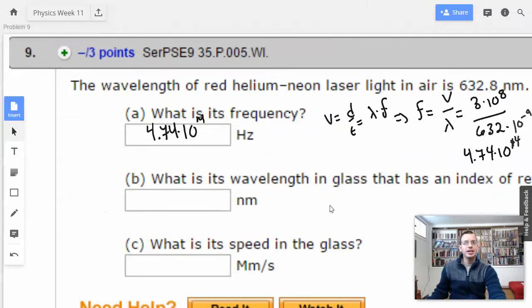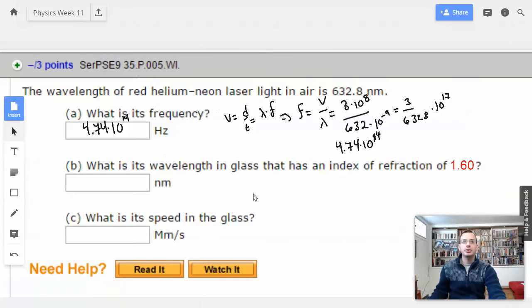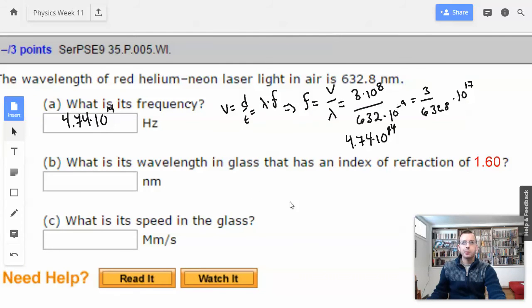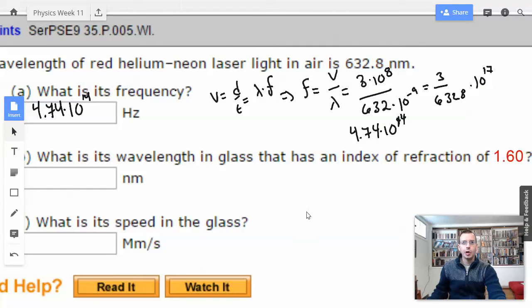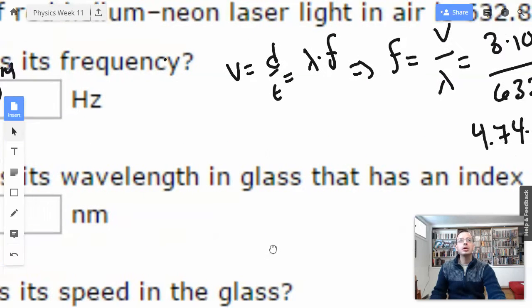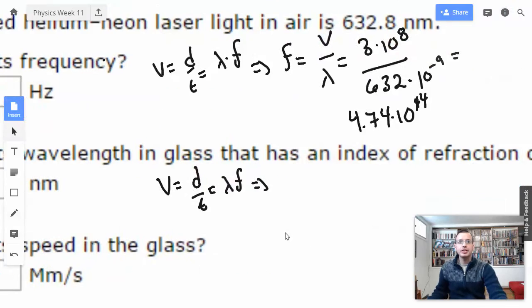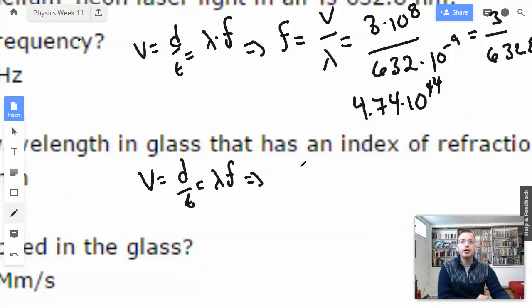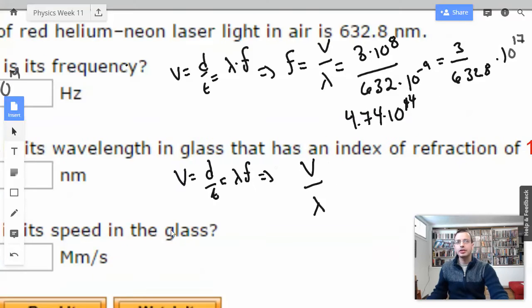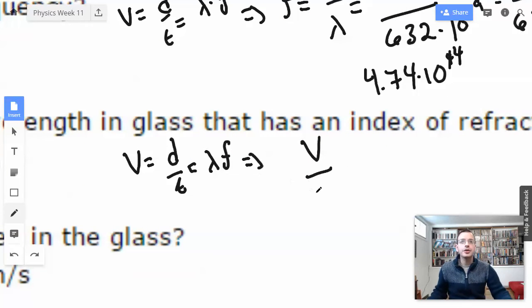So let's do 4.74 times 10 to the 14th. What is its wavelength in glass that has an index of refraction of 1.6? V equals D over T, which equals lambda F.